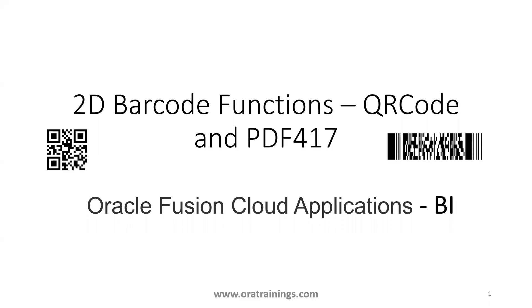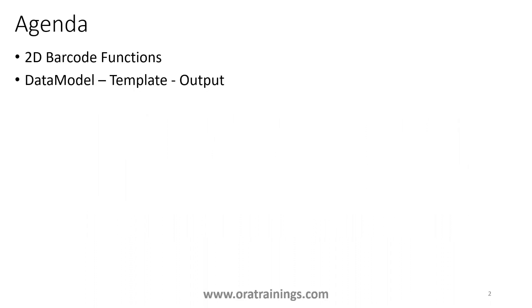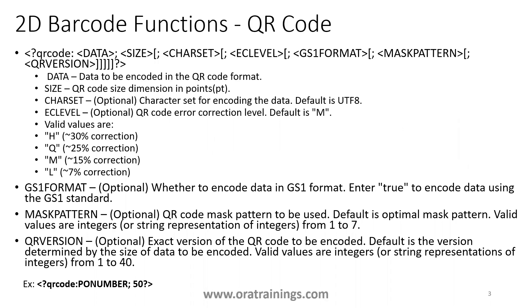Welcome to oratrainings.com. In this session we'll discuss 2D barcode functions. There are two types: QR code and PDF 417. The QR code is one of the 2D barcode functionalities in Oracle Fusion BI. The syntax starts with the QR code tag, followed by the data element (the XML tag), then the size of the QR code. There are optional parameters as well. For basic use, you just need the QR code tag, the XML element tag, and the size.